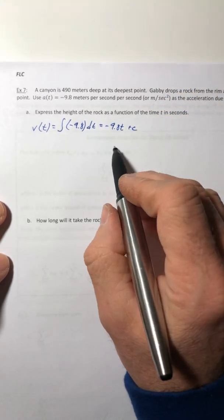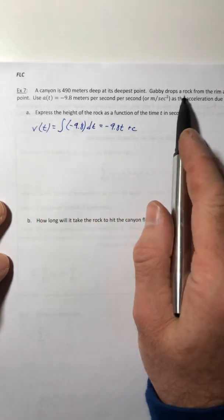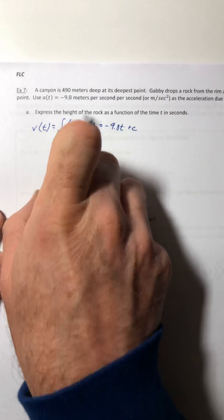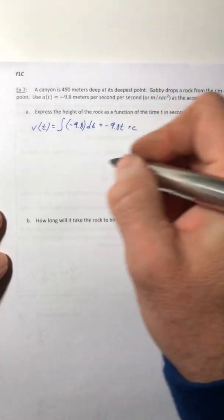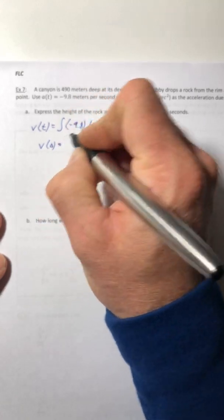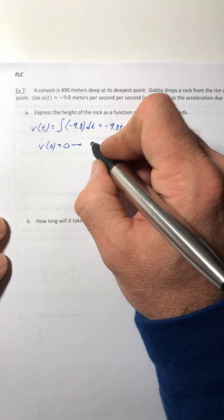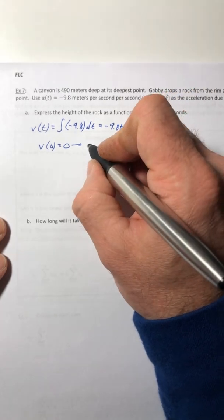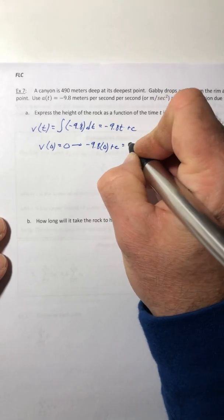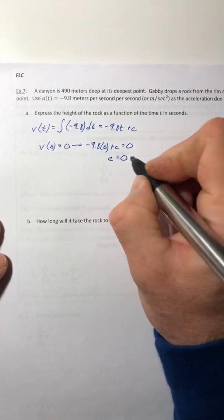So negative 9.8 T plus C. Well, since she drops the rock, when she just drops it, its starting velocity is going to be 0. So if we plugged in 0 for T and set that thing equal to 0, C comes out to equal 0 itself.